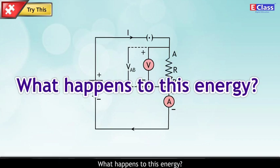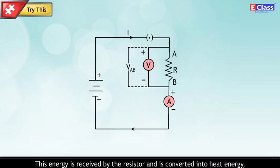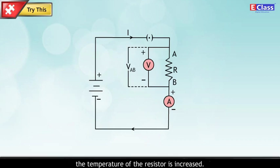What happens to this energy? This energy is received by the resistor and is converted into heat energy. The temperature of the resistor is increased.